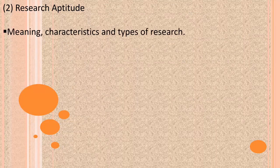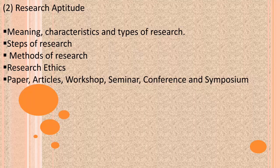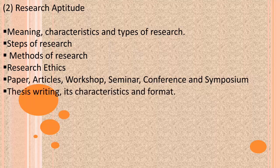Part 2 is Research Aptitude, which includes meaning, characteristics and types of research, methods of research, research ethics, research papers, articles, workshops, seminars, conferences, and symposiums — including their characteristics and formats.